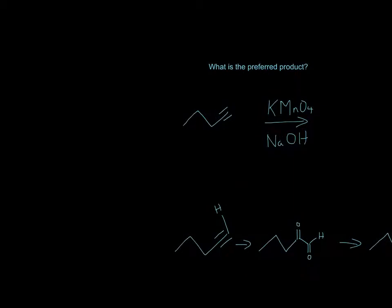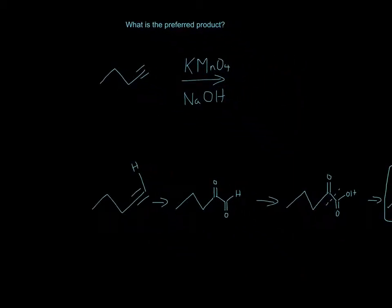Okay, so KMnO4 and then NaOH. The original product will form this product. At each of the sites, it will form a carbonyl, and since on this site there's always a hydrogen implied, it will form an aldehyde on this side.